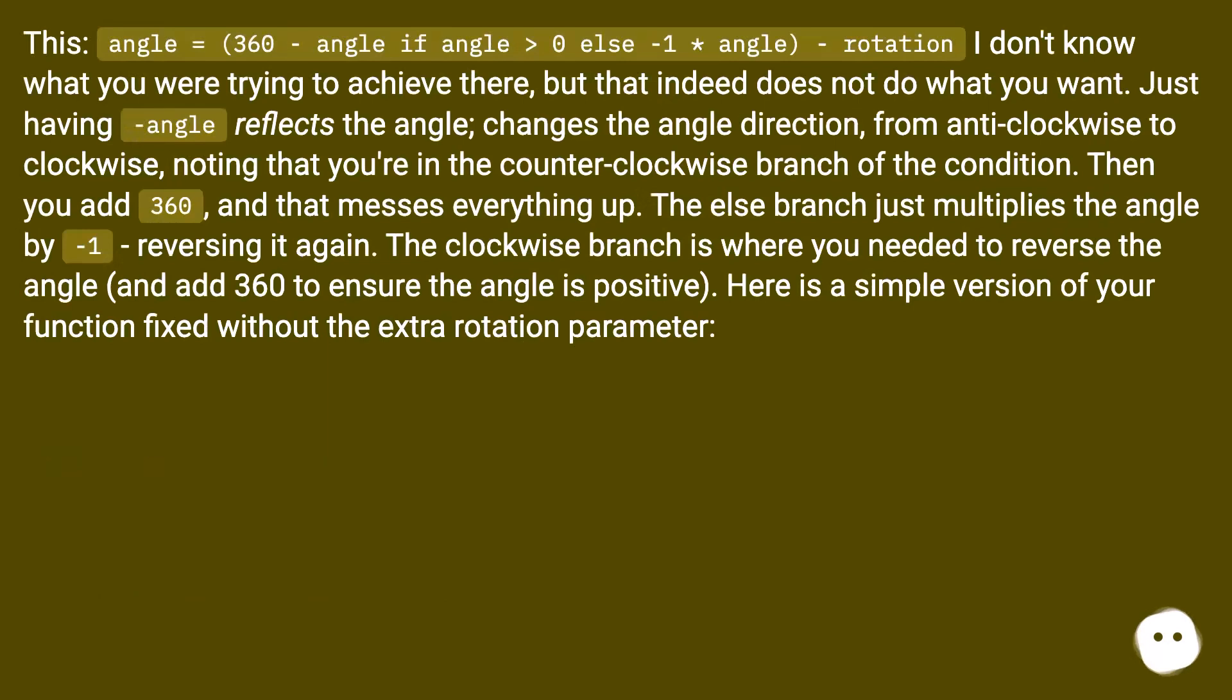This: angle = (360 - angle if angle > 0 else -1 * angle) - rotation. I don't know what you were trying to achieve there, but that indeed does not do what you want. Just having -angle reflects the angle; changes the angle direction from anti-clockwise to clockwise, noting that you're in the counterclockwise branch of the condition.